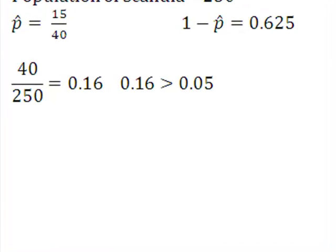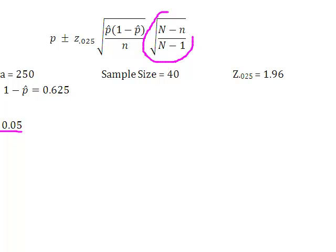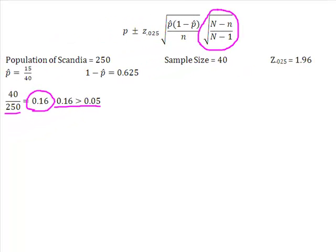So what I've done down here is I've taken 40 divided by 250 gives me 0.16. 16% or 0.16 is greater than 0.05. So I go up here and I say, okay guys, now I have to use this finite population correction factor. Other than this, there's absolutely no difference.